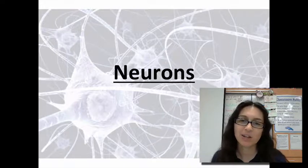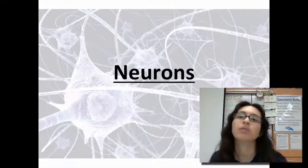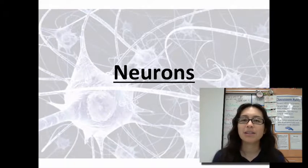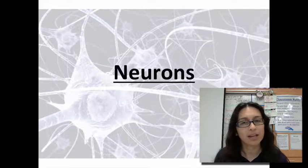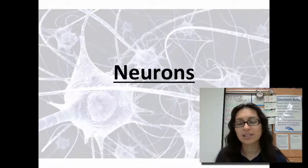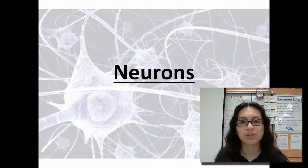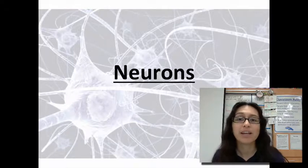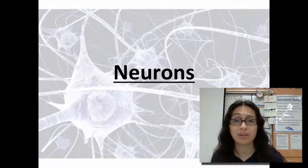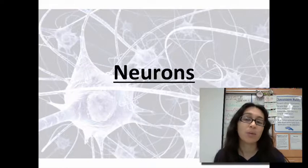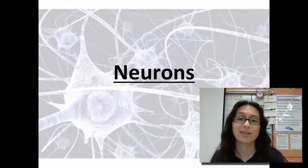Hey Mustangs, in this video we're going to be taking a look at neurons, which are the cells of the nervous system. Neurons are really neat and interesting because they do something that the other cells of the body don't or can't. These cells are actually designed to conduct electricity, to transfer electric charges as signals throughout the entire body, in order for the body to communicate with itself. So let's go ahead and take a look at neurons.